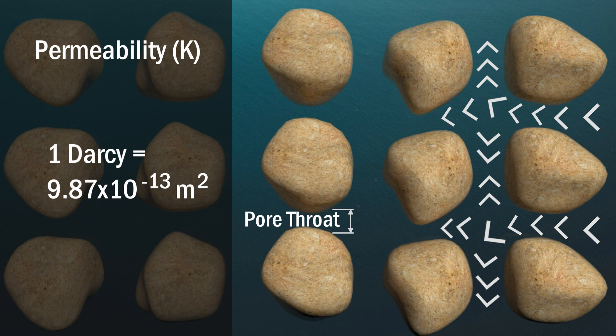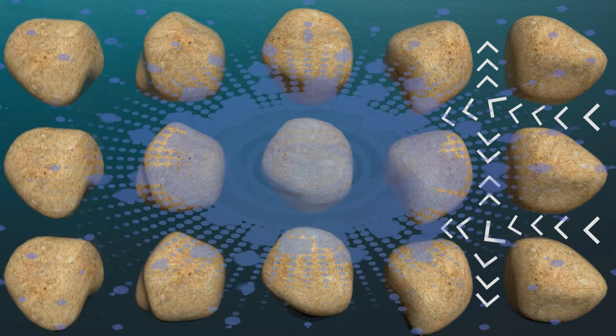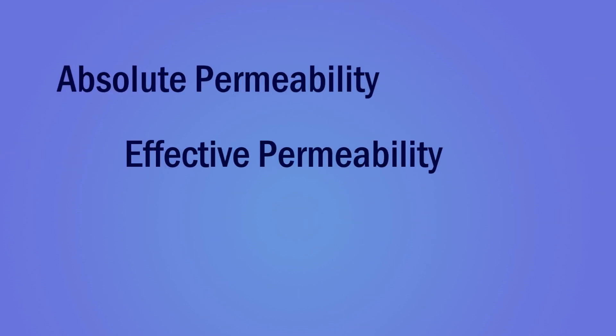Permeability is measured by a unit called Darcy. One Darcy is equal to 9.87 x 10⁻¹³ meter squared. This is an indication that permeability increases with the increase of the pore passage or pore throat cross-sectional area.